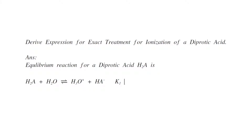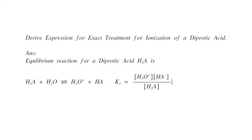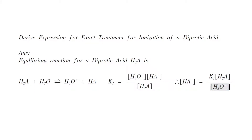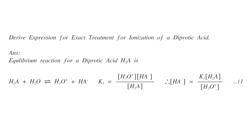From the first reaction, K1 equals [H3O⁺][HA⁻] divided by [H2A]. Rearranging this equation gives the concentration of HA⁻, which equals K1 times [H2A] divided by [H3O⁺]. This is equation number one.